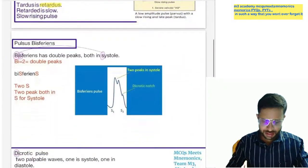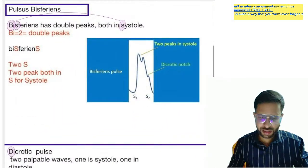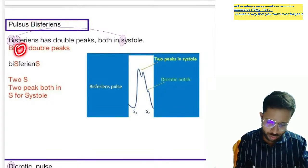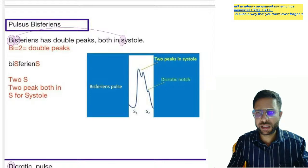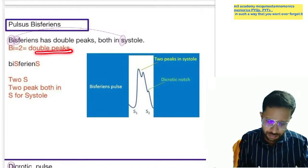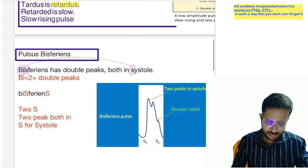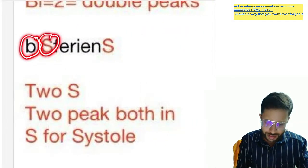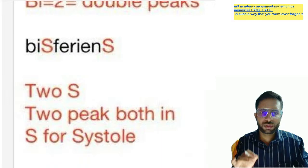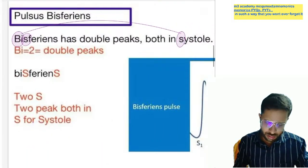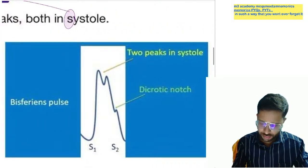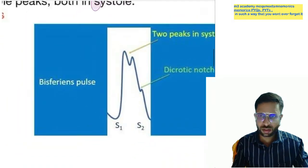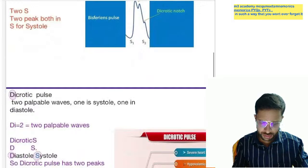Next is pulsus bisferiens. As the name suggests, bisferiens has 'bi' — bi means two, so double peak. Both peaks are in systole. In the spelling of bisferiens: bi means two, and S and S — both peaks in systole. You can see in this diagram: one peak, two peaks, both in systole. This is pulsus bisferiens.